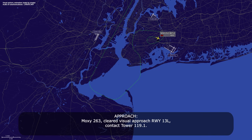Moxie 263, cleared for visual approach runway 13L — contact tower 119.1. Visual approach runway 13L, contacting tower, Moxie 263.